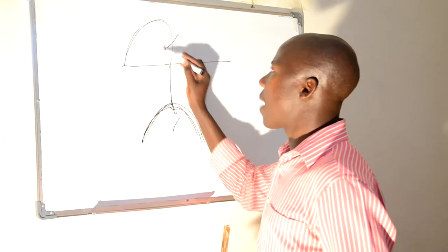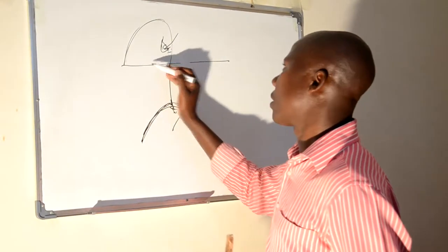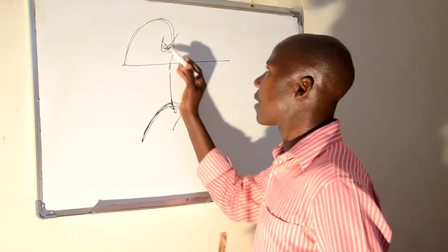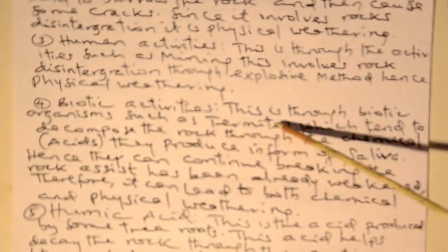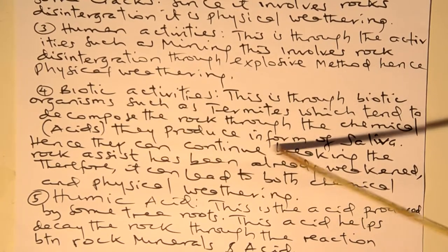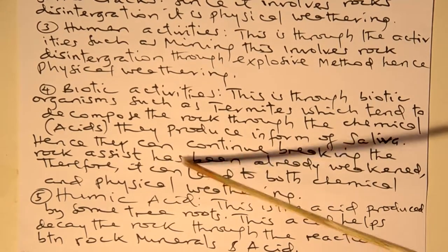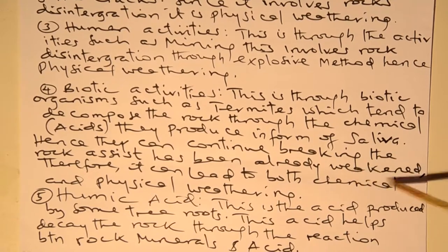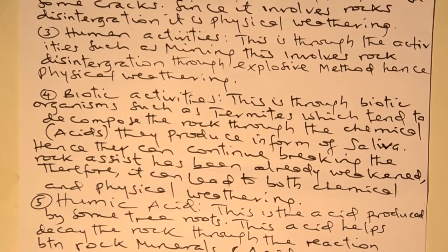People come to exploit or to undergo exploration to extract minerals, and this process can lead to weathering taking place, which is physical in nature. Apart from that is biotic activity. Through biotic organisms such as termites, which tend to decompose the rock through chemical means as they produce substances for survival, they can continue breaking the rock once it has been weakened. Therefore, it can lead to both chemical and physical weathering.